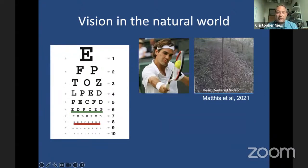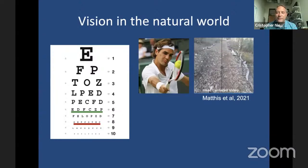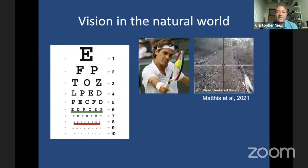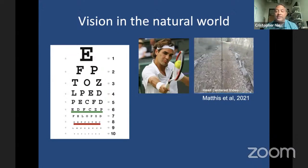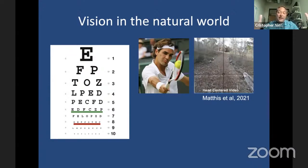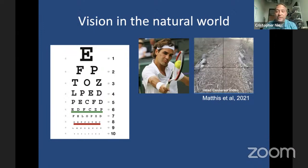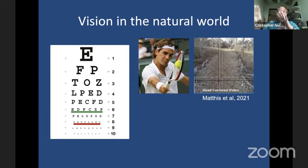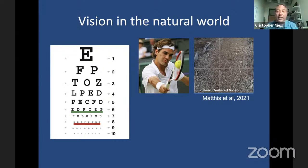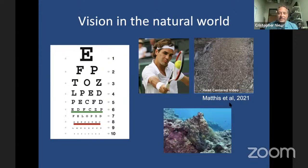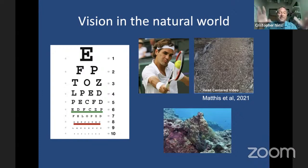We also use our vision to navigate through the world. This video from Mary Hayhoe's lab shows how complex the task of just walking down a path is — not only do you have to find the path, which just differs from the background based on minor textural changes, but the whole thing is continuously moving, making it a much more computationally challenging problem. We also use our vision to detect hidden objects, like a camouflaged octopus, which itself has to use vision to analyze the visual scene and choose the appropriate camouflage pattern.